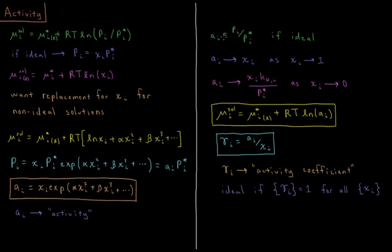For an ideal solution, all of these coefficients would be zero. This exponential would be e to the zero, which would be one, and the activity would equal the mole fraction.